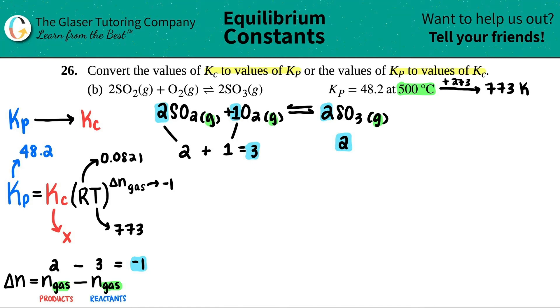Okay. Now let's plug everything in. So Kp was 48.2. And this equals the X value, which is Kc. Okay. Close that up. We got R times T. R was 0.0821 times 773. And we're going to raise that all to the negative 1 power.